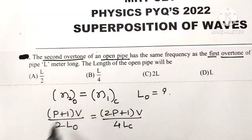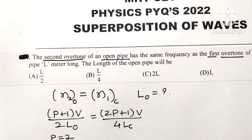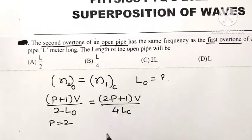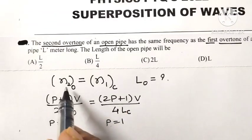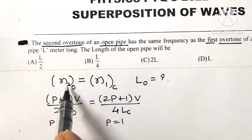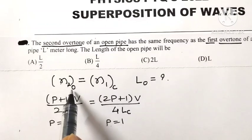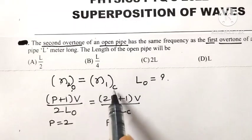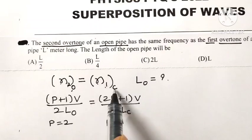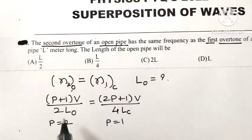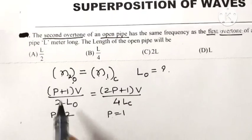For the open pipe, the value of p is equal to 2, that is the second overtone. And for the closed pipe, the value of p is equal to 1. They are having the same frequency — the frequency of the second overtone of the open pipe equals the frequency of the first overtone of the closed pipe. So, put the value of p here.